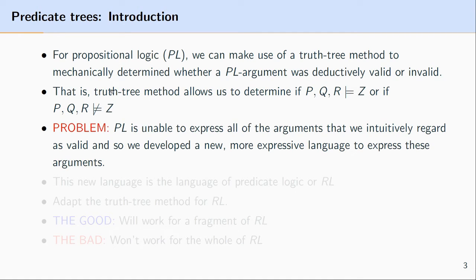One of the problems with propositional logic truth trees is rooted in the language of propositional logic itself. We can't take all the arguments that we intuitively think are valid and translate them into propositional logic, and if we can't do this then we can't make use of the propositional logic truth tree method. There's a whole host of arguments in English or other formal languages that we can't reduce down to propositional logic. What we need is a more expressive language to capture all these different arguments.